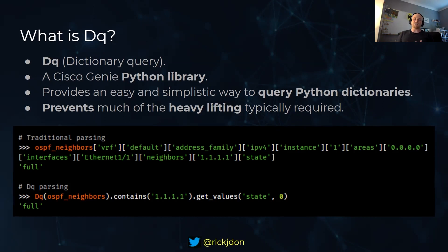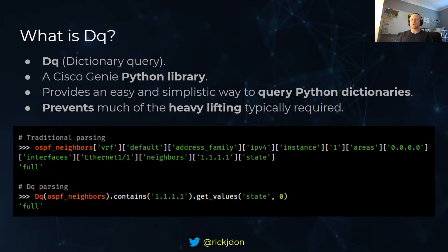What DQ does is it takes that heavy lifting out of that process. Rather than doing your traditional parsing where you step down through that structure all the way to the value you need, DQ parsing allows you to actually simplify that parsing using a set of helper methods to pull your data out of that big complex nested structure in a really simple way.